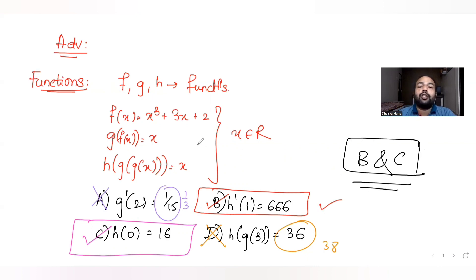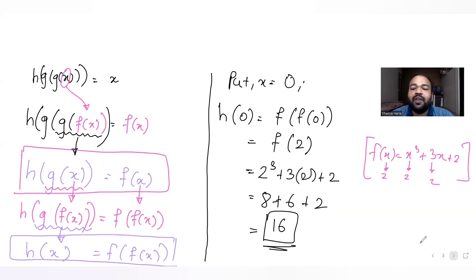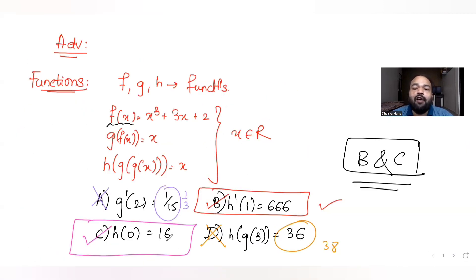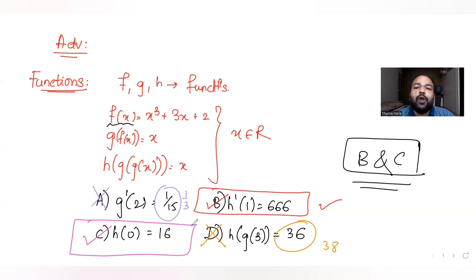So we get two correct answers for this question: options B and C. I hope you understood how to solve questions on functions involving compositions like f(x), g(f(x)), and h(g(g(x))) — how to simplify them and then substitute values. I'll see you tomorrow with more JEE Advanced questions. Do like, share, and subscribe to my channel!